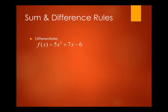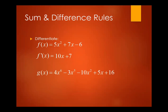Sum and difference rule: distribute the operation. The derivative is 10X plus 7. Another example: 4X to the power 6 minus 3X to the power 5 minus 10X plus 5X plus 16. Get the derivative of each individual function: 24X to the power 5, minus 15X to the power 4, minus 20X plus 5.